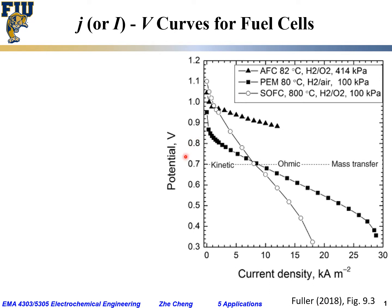The vertical axis is cell potential — the terminal potential measured between the anode and the cathode, between the hydrogen electrode and the oxygen electrode. The horizontal axis is current density in units of kilo amp per meter square.